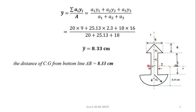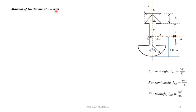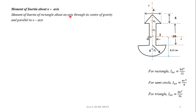Now we find the moment of inertia about the x-axis and y-axis. The figure has centroids G1 (rectangle), G2 (semicircle), and G3 (triangle), with overall centroid CG. The moment of inertia of the rectangle about its own centroid G1 parallel to the x-axis is IGx1 = bd³/12, where base = 2 and depth = 10. So IGx1 = 2 × 10³ / 12 = 166.67 cm⁴.